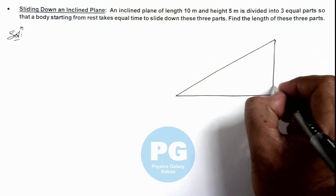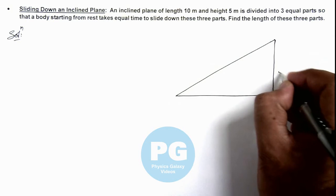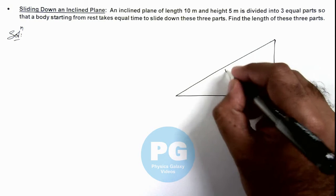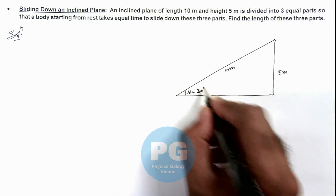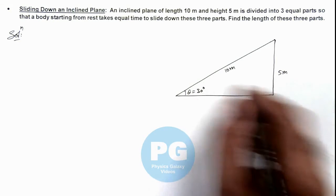This is an inclined plane which is of height 5 meters and its total length is 10 meters. Then obviously the angle theta here can be written as 30 degrees because sine theta is 5 by 10, that is 1 by 2.